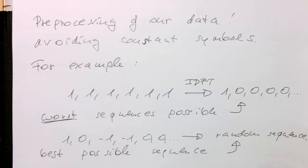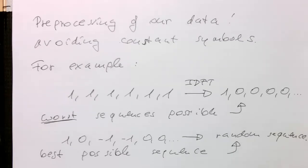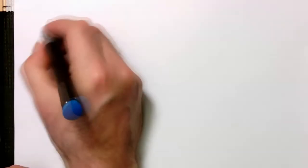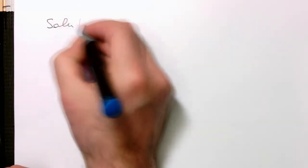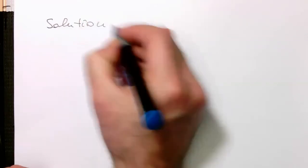So random sequence, obviously the problem is transmitting a random sequence is of no use because we would like to transmit data. So we need to find a way of randomizing our data.